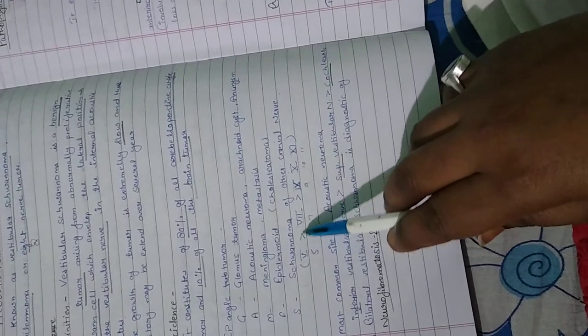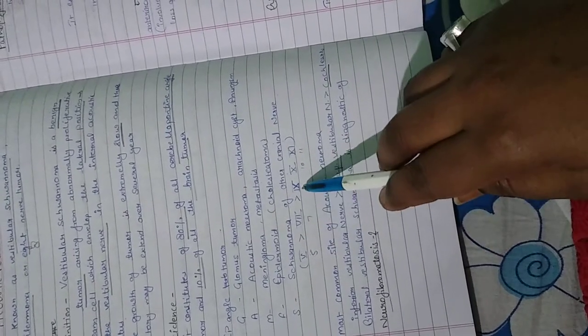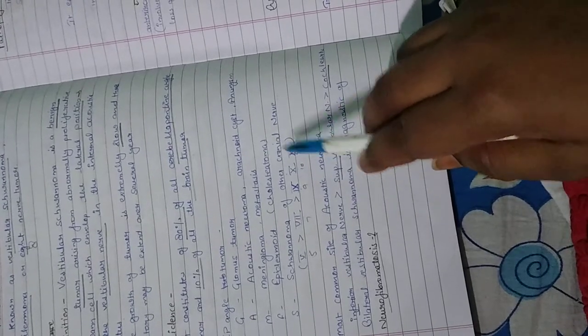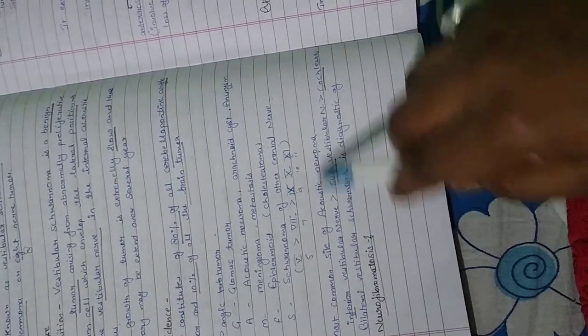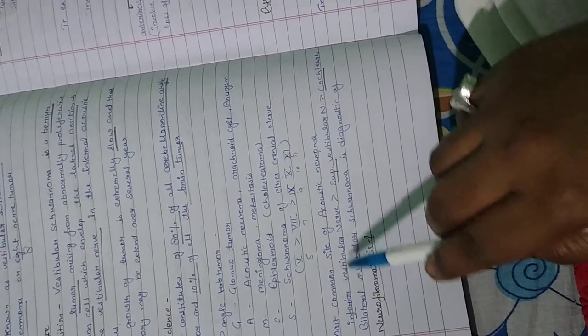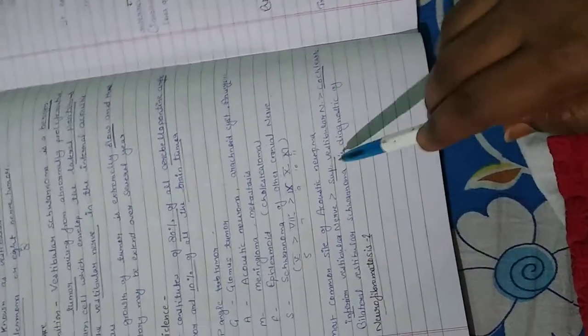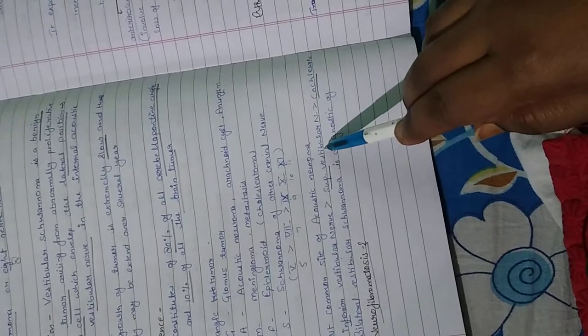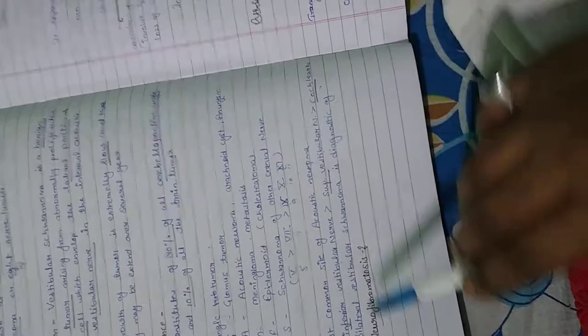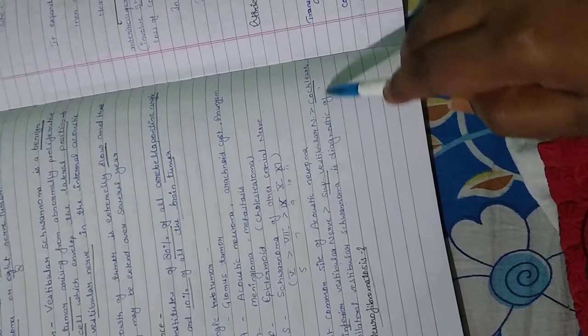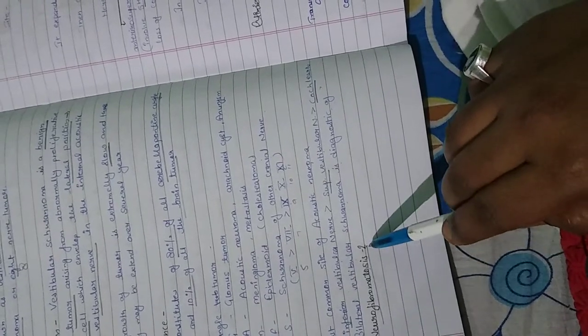Cranial nerves that can be affected include the 5th, 7th, 9th, 10th, and 11th. The most common site of Acoustic Neuroma is the inferior vestibular nerve. Bilateral Vestibular Schwannoma is diagnostic of Neurofibromatosis type 2.